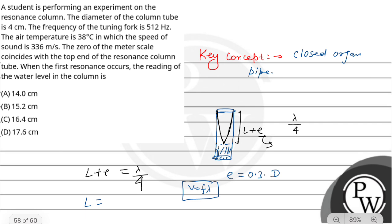L = v/(f × 4) - e. V is given as 336 m/s, f is 512 Hz, and e = 0.3 times the diameter, which is 4 cm or 4 × 10^-2 meters.